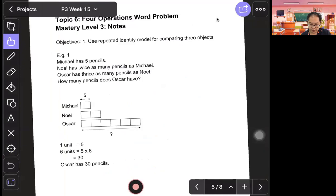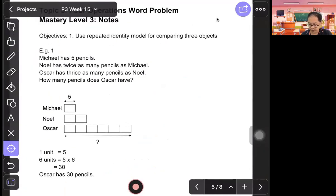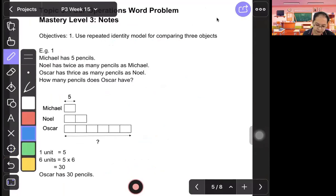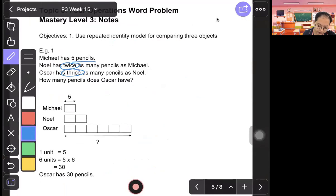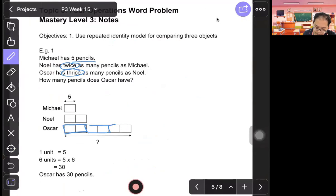Mastery level three. Objective is to use repeated identity model for comparing three objects. So we have Michael, Noel, and Oscar. Michael has 5 pencils. Noel has twice, two units. Oscar has thrice, three units. How many pencils does Oscar have? So Michael, one unit is 5. Two units will be 2 times 5. Oscar, six units. How to get six units? Because earlier on, he said Oscar has three times of Noel. So three times 2 is 6. So 5 times 6. Oscar has 30 pencils.